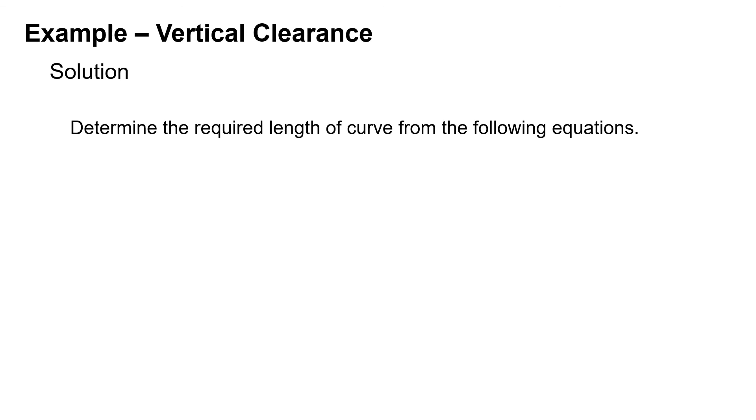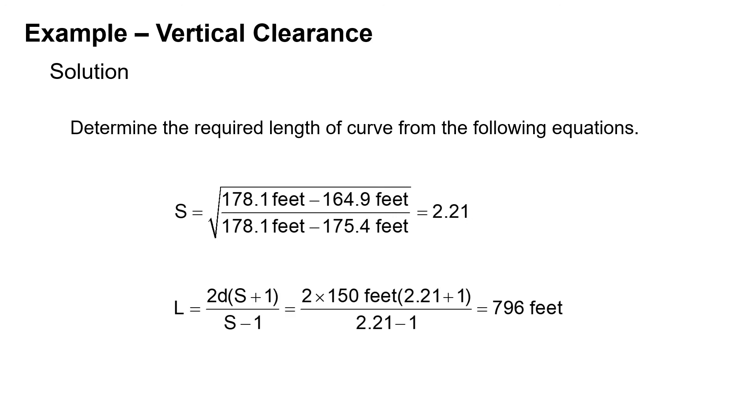Next we can determine the required length of curve from the following equations. Solving for S: 178.1 minus 164.9 divided by 178.1 minus 175.4 gives us an S of 2.21. Then our equation for L is 2 times our 150 feet distance from the PVI times 2.21 plus 1 divided by 2.21 minus 1, which gives us a length of 796 feet to fit the vertical curve through our point of interest.